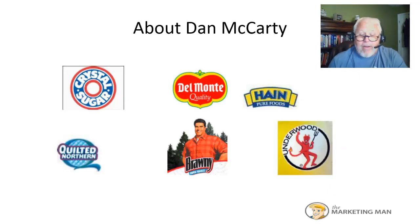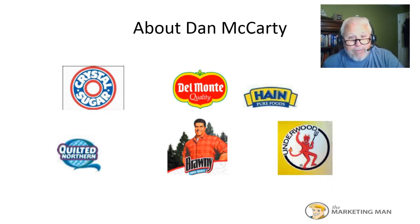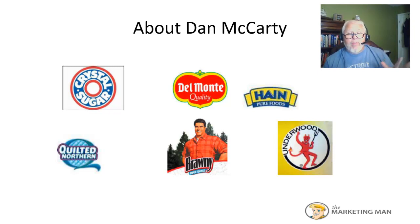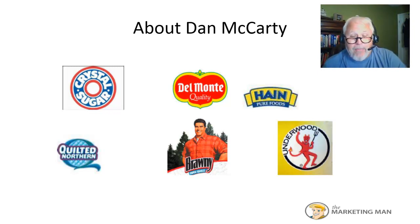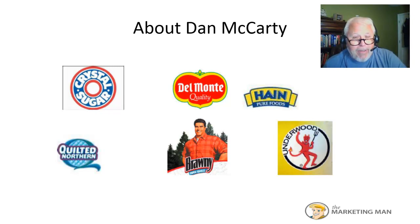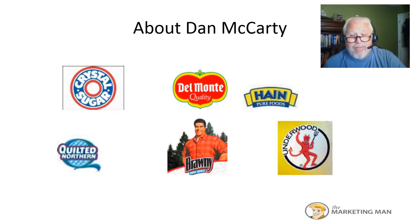My name is Dan McCarty, and just to give you a little bit of my background, I have an MBA from the University of California in Advertising and Marketing. I worked my way up in the business world from an entry-level marketing job to President and CEO. I've run some of America's biggest and well-known brands — billion-dollar businesses like Brawny Paper Towels, Quilted Northern Bath Tissue, Dixie Cups and Plates, Del Monte Fruits and Vegetables, Crystal Sugar — there's just a number of them.